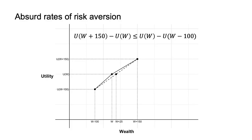From the rejection of the bet, we know that U(W+150) − U(W) ≤ U(W) − U(W−100). This means that you value each dollar between W and W+150 on average by at most 100/150, or two-thirds, as much as you value each dollar on average between W and W−100. We can see this in the slope of the two black lines forming part of the utility curve — the second part has two-thirds the slope of the first. By weak concavity, you value your (W+150)th dollar at most two-thirds as much as your (W−100)th dollar. The relative value of each dollar has declined by one-third over a span of $250.